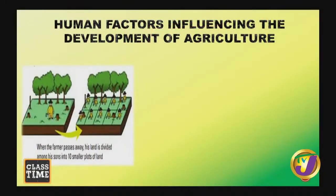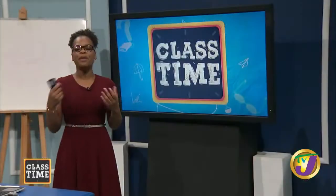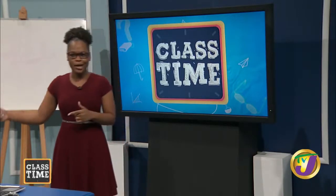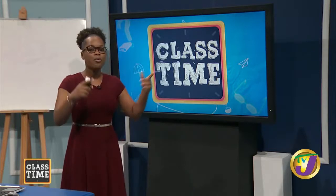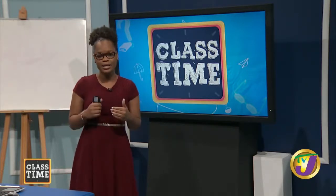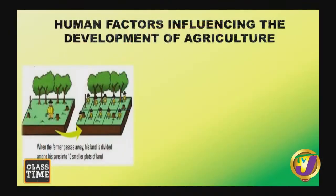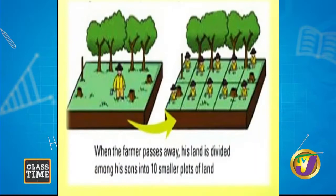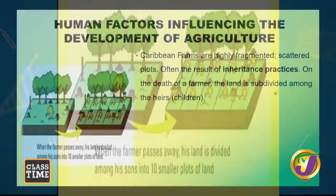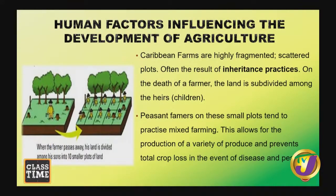Land fragmentation occurs when, for example, a grandparent who owned land passes away and subdivides the land among children and family members. An uncle gets a portion, an aunt gets a portion, a cousin gets a portion — the land becomes fragmented. Land sizes become smaller and plots are scattered. Those who now own these parcels may not have the best relationships with each other, leading to further complications.